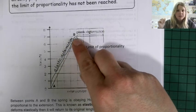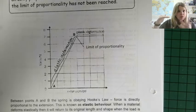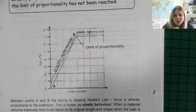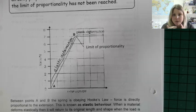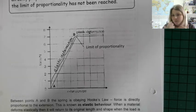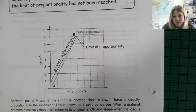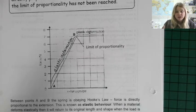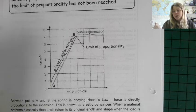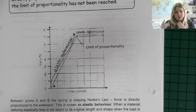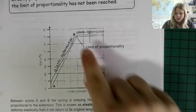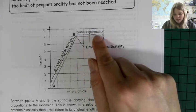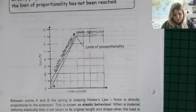Up until the limit of proportionality, when we remove the force the spring returns to its original length. The limit of proportionality is a particular force dependent on the material the spring is made from. Once your force goes past that point, the spring no longer returns to its original length. I'm sure you've done that — stretched a spring so much it doesn't return. Once in that region, we say it's plastic deformation, or that the spring is behaving plastically.